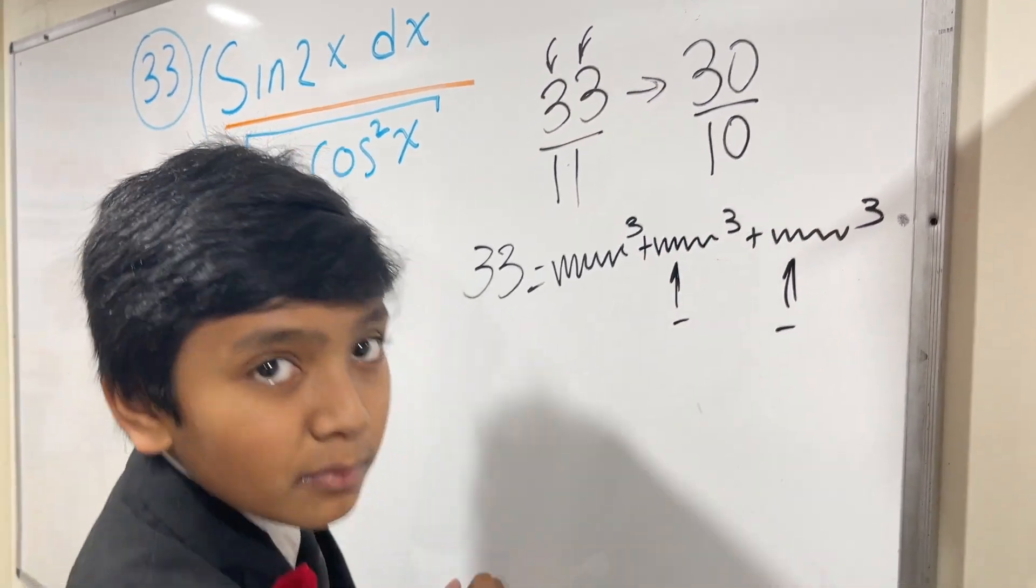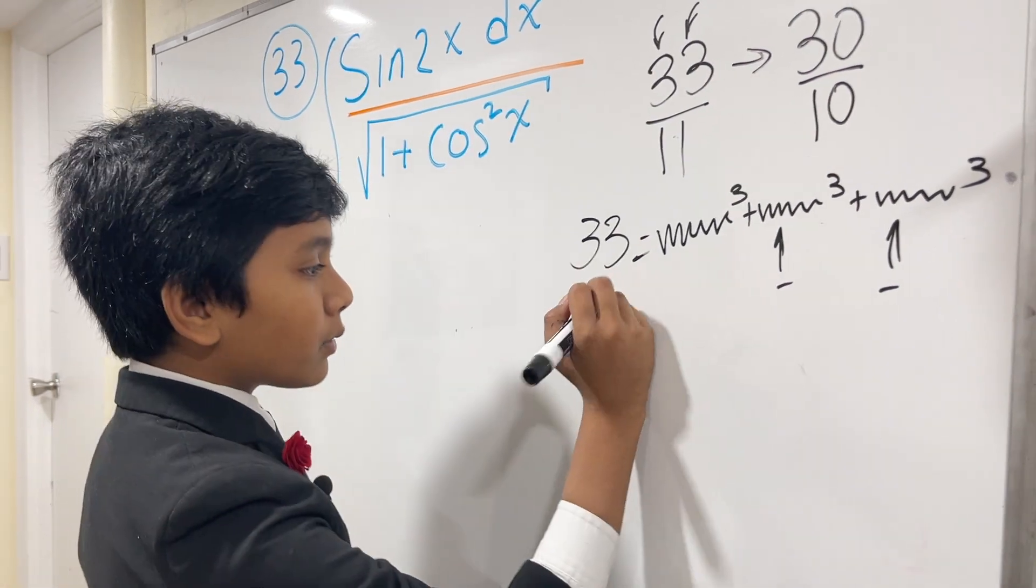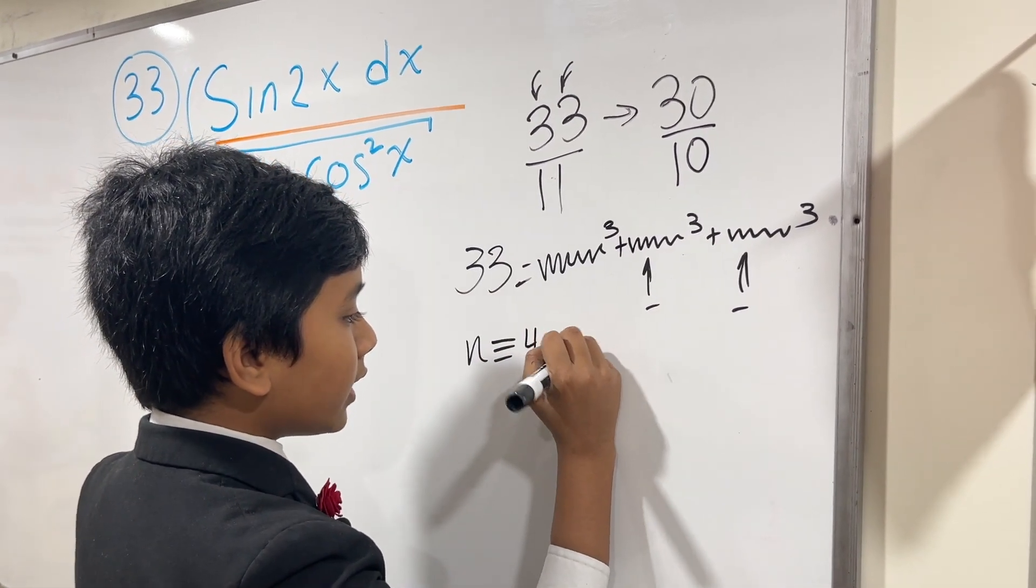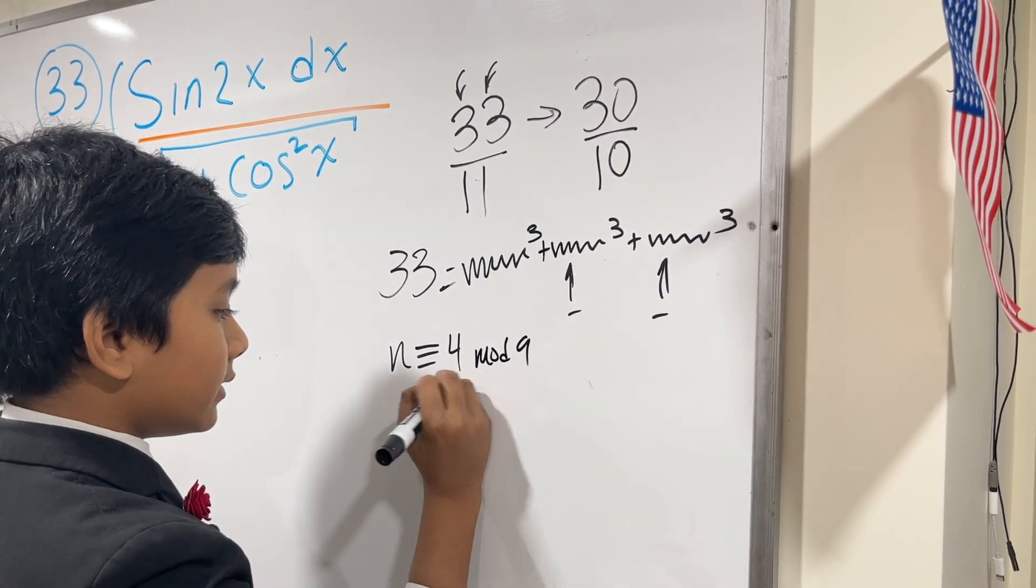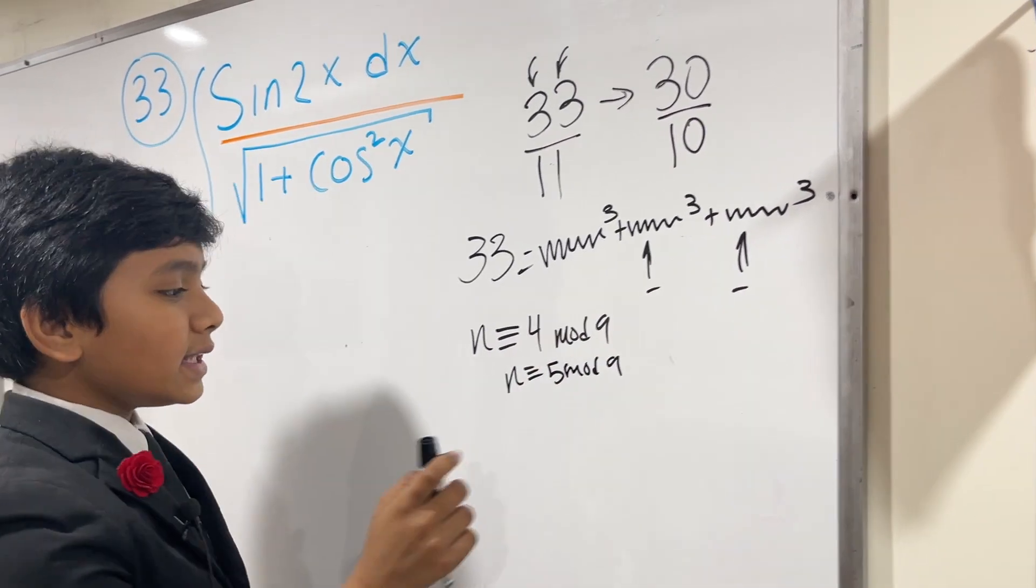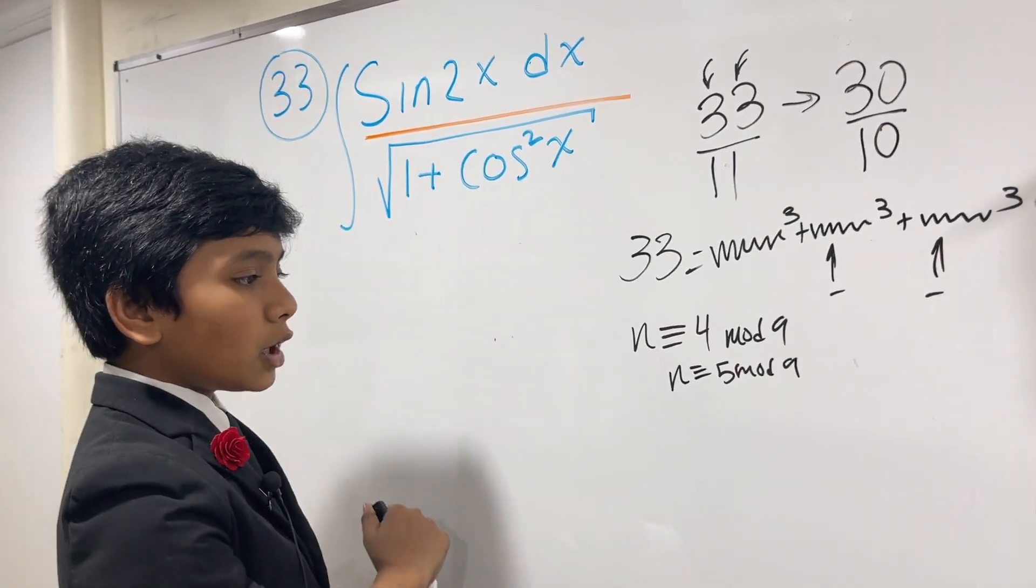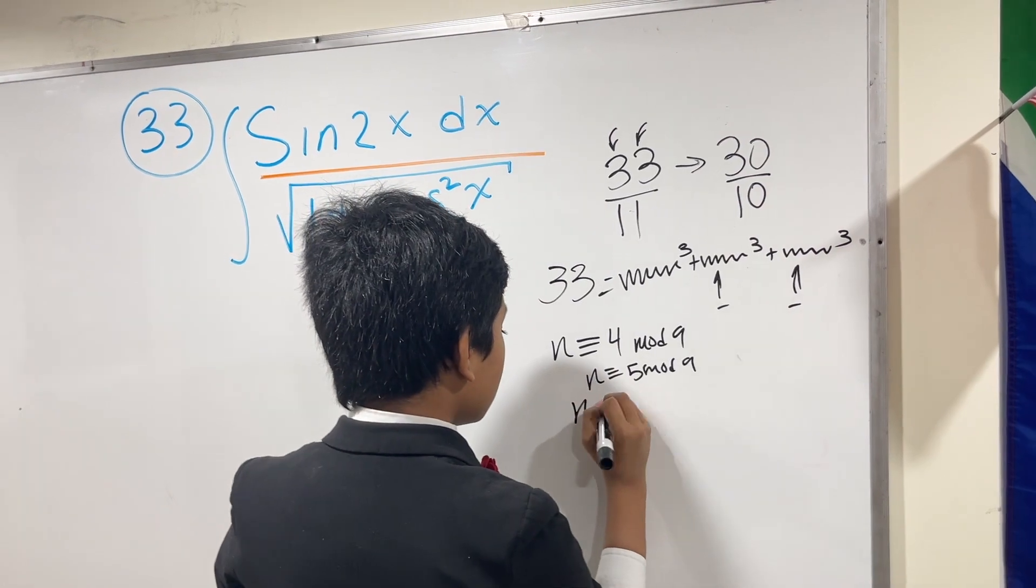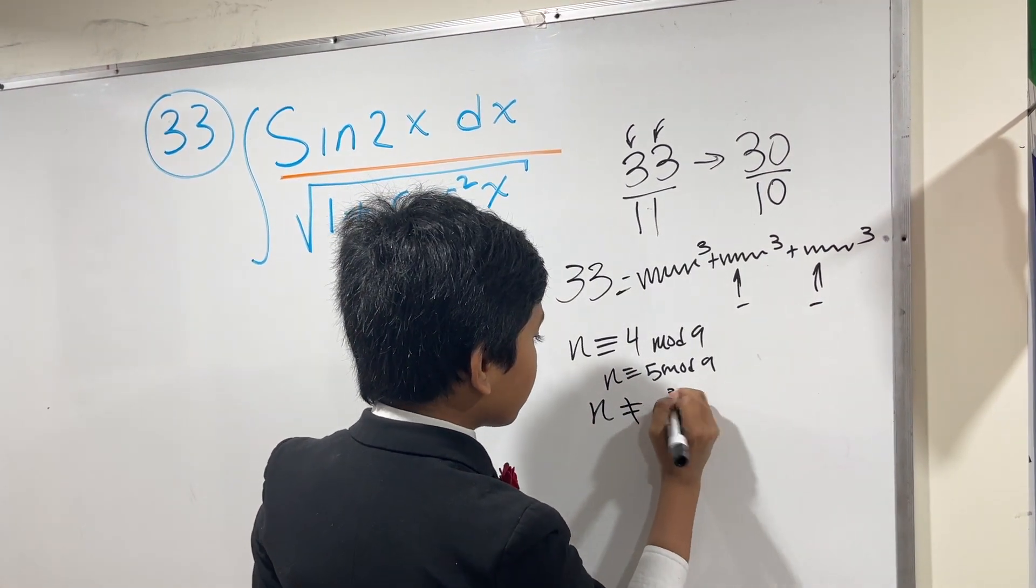Basically, the problem is if a number is not congruent to 4 mod 9 or 5 mod 9, then is there a number that is not congruent to 4 mod 9 or 5 mod 9 that is not expressible as the sum of three cubes?